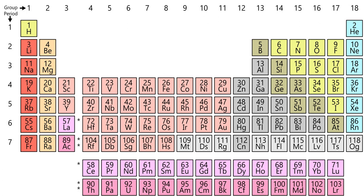Neon has a density of 0.9002 × 10⁻³ g/cc, liquefies at −245.95°C, and solidifies at −248.45°C. It has the narrowest liquid range of any element and, in liquid form, has over 40 times the refrigerating capacity of liquid helium and 3 times that of liquid hydrogen. Neon has a very high ionization energy (2,080.7 kJ/mol), low electron affinity (estimated at −120 kJ/mol), and very high electronegativity (4.84 on the Allred-Rochow scale). It is the least reactive of the noble gases. No normal compounds of neon have so far been synthesized.